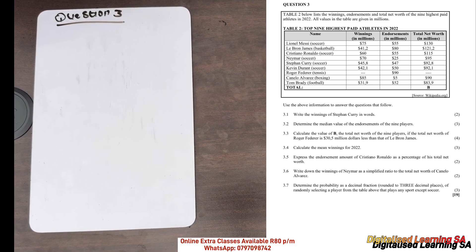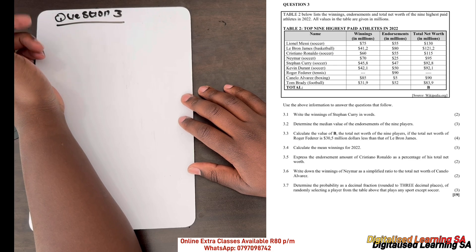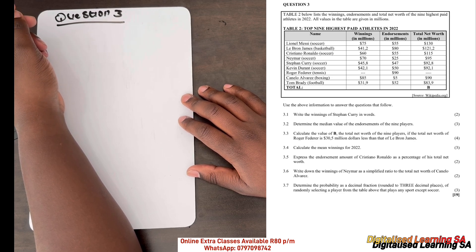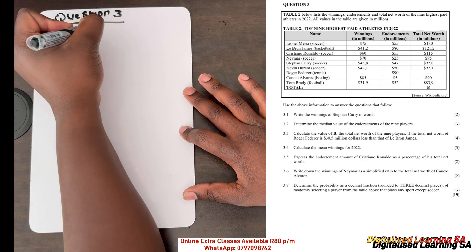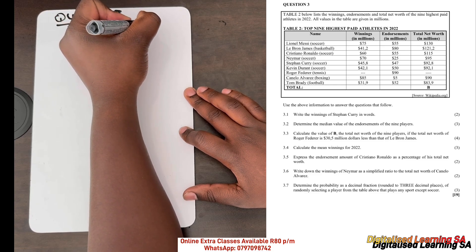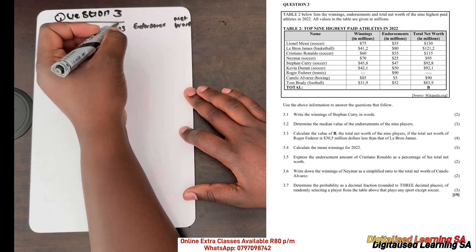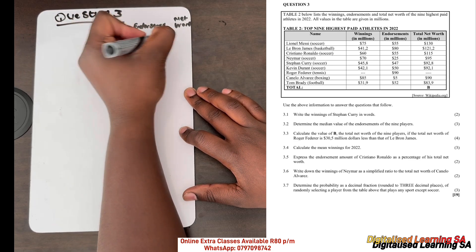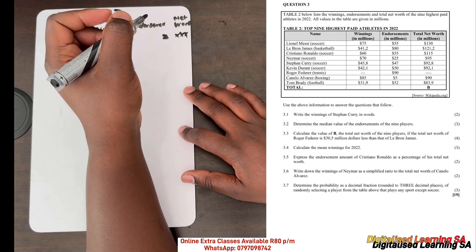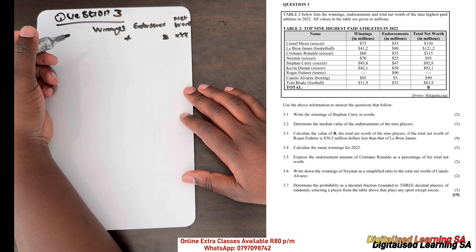In this video we are going to start with question three. We are told that table two below lists the winnings, endorsements, and total net worth of the nine highest paid athletes in 2022. All values in the table are given in millions. So we have three columns: the winnings column, the endorsement column, and the net worth column. Net worth equals winnings plus endorsements.